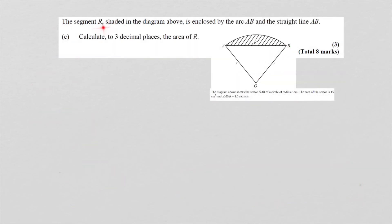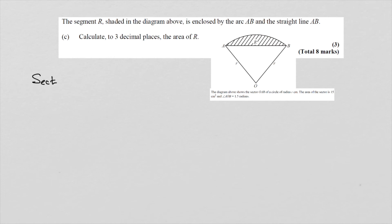The segment R is enclosed by arc AB and the straight line AB. To calculate the area of the segment to 3 decimal places, we need the area of the sector minus the area of the triangle. We already know the area of the sector equals 15 centimeters squared.